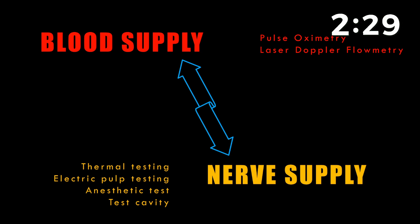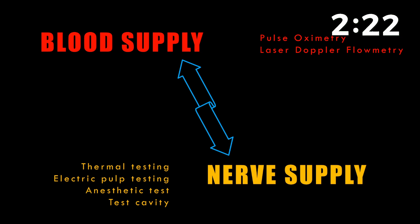In order to check whether the tooth has an intact nerve supply, there are many tests available. Among them, thermal testing, electrical pulp testing, anaesthetic testing, and test cavity are the ones that are feasible and can be carried out in a clinical setting.